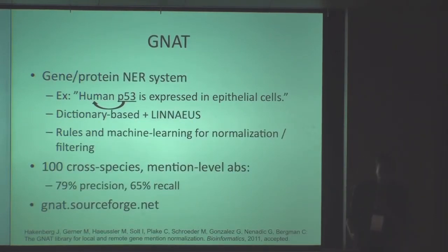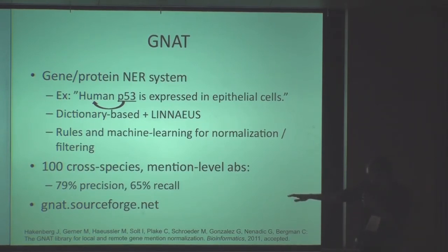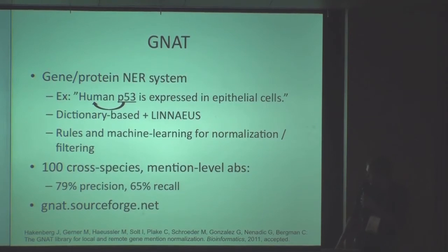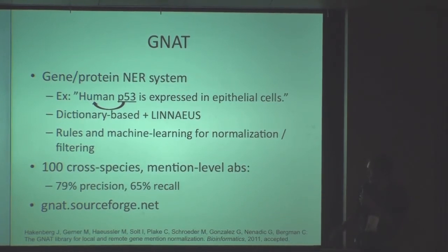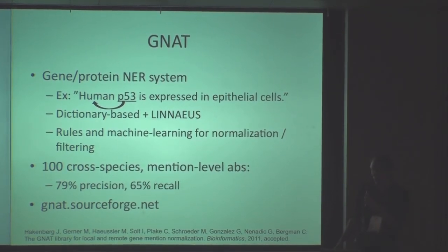Another entity recognizer that is available is called Gnat, which finds genes and proteins. This is much more challenging — you can see the data and numbers illustrating that. In this case, it's about locating P53, recognizing which protein or gene we're talking about, and linking it to the correct identifier. This turns out to depend mostly on the species, which is the critical thing to recognize.